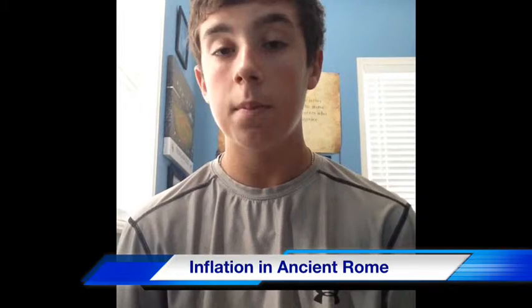Inflation played a huge role in why ancient Rome fell. Inflation occurred because their money lost its value when taxes and everyday food started to rise. Nero and other emperors debased the currency in order to supply demand for more coins. As this graph shows,